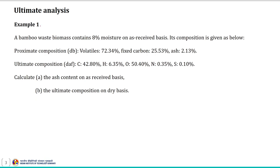The first example is on ultimate analysis. A bamboo waste contains around 8 percent moisture on an as-received basis, and its proximate composition — volatile content, fixed carbon content, and ash content — is given on a dry basis.